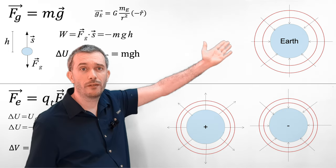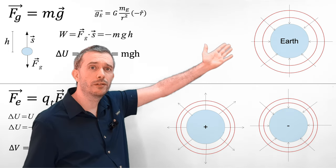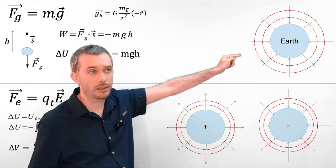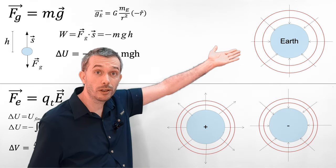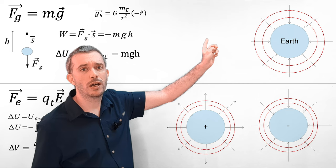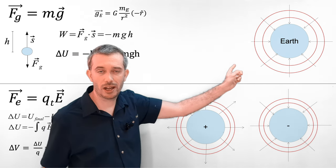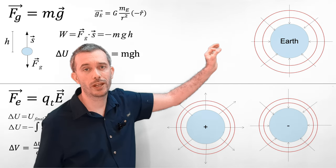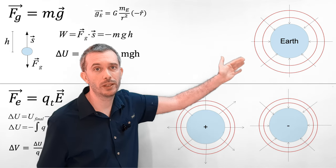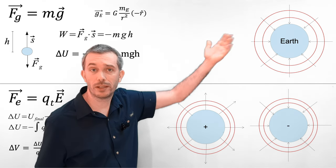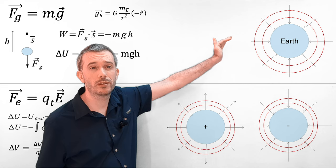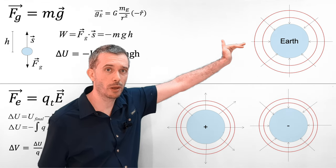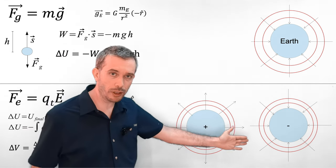With gravity, we have the vector field of gravity that points towards the object that's causing it — in this case, for example, the Earth. And then we would have these equipotential lines around it where the potential energy of an object would be the same. The higher we go away from the surface, the higher the potential energy of an object.